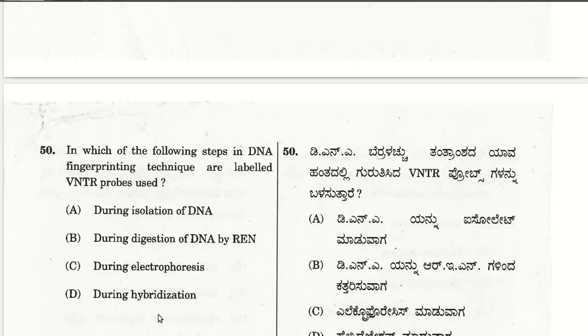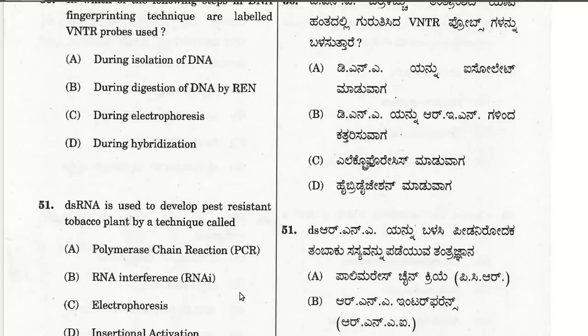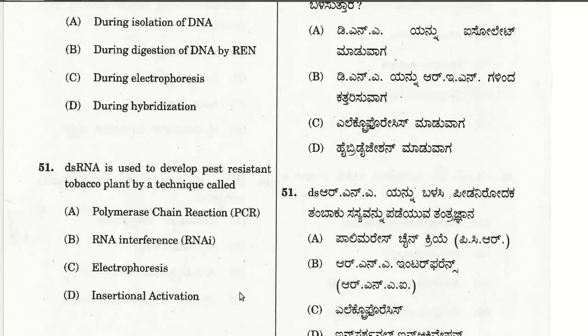The fiftieth question: in which step of DNA fingerprinting technique are labeled VNTR probes used? The answer is during the hybridization step of DNA fingerprinting, where VNTR — Variable Number of Tandem Repeats — probes, which are radioactive, are used.